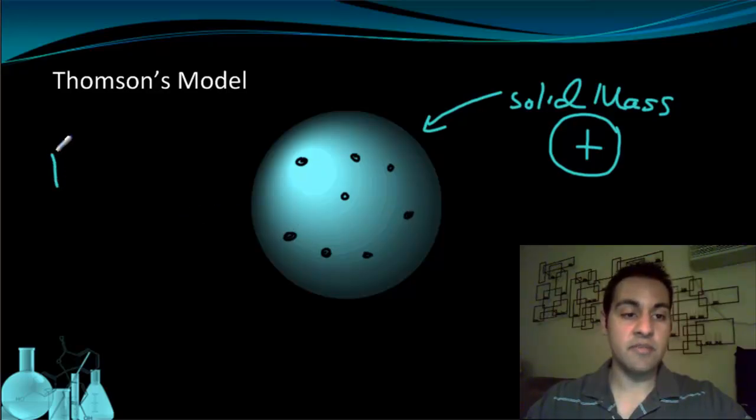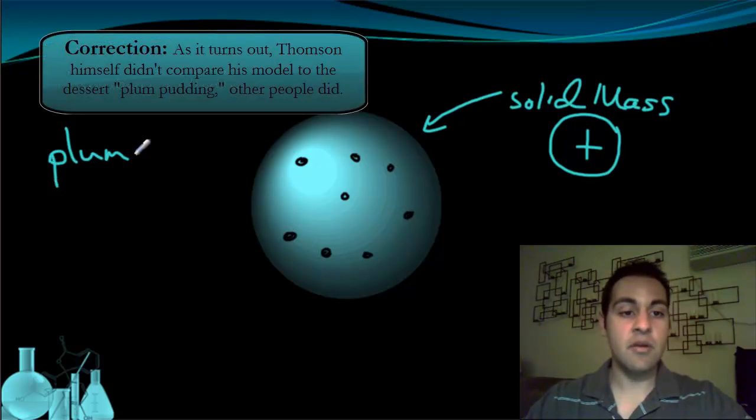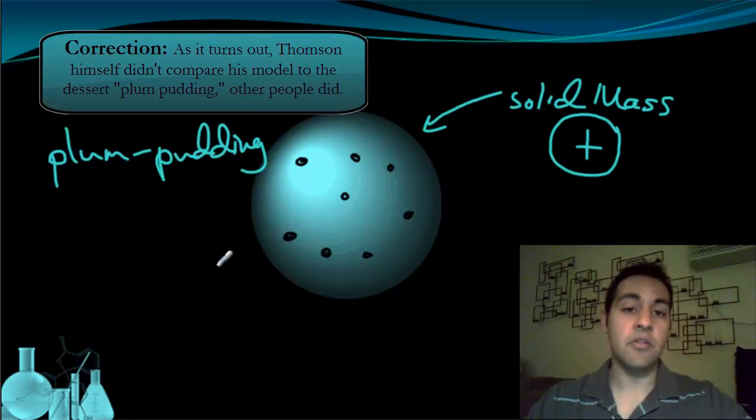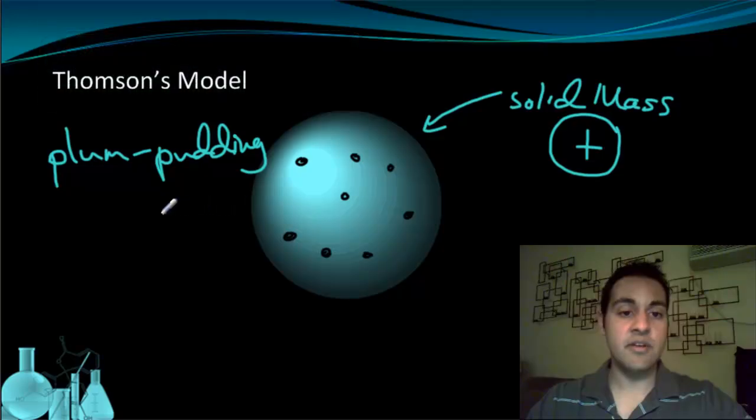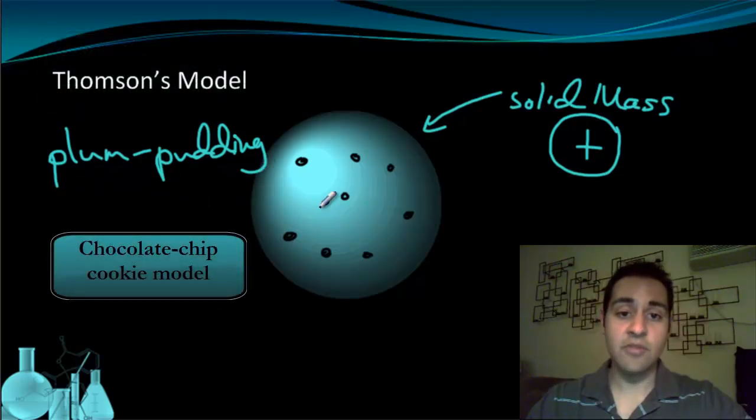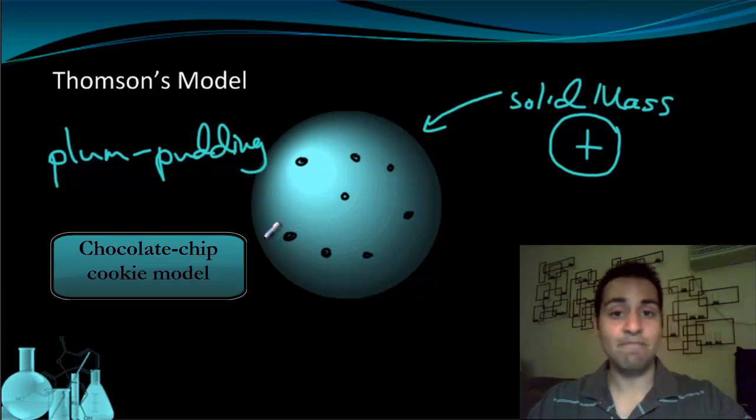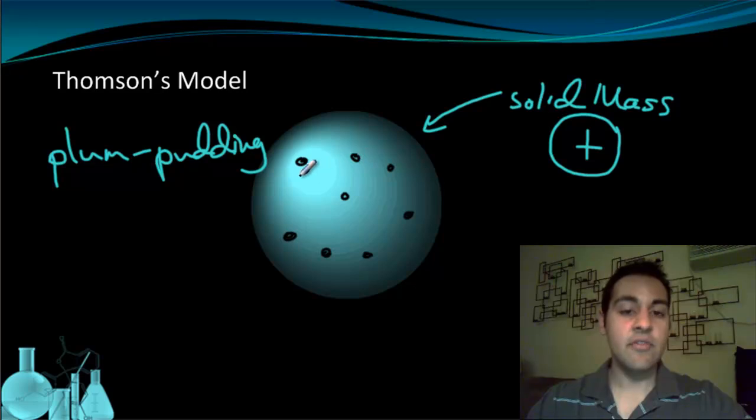He called it, because he's British, the plum pudding model. That was a pretty common dessert, but it's not something we really eat, so I like to call this the chocolate chip model because it looks like a chocolate chip cookie. Now the electrons in this chocolate chip model are not just stuck in there. They're actually on rotating rings and they're constantly moving throughout this solid mass.